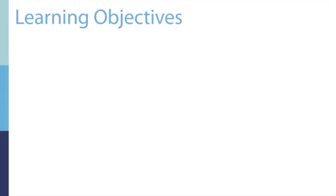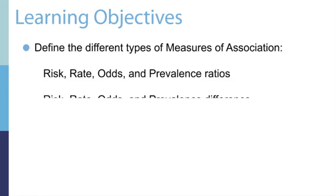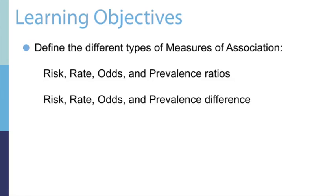After you have reviewed all of the week four lectures, you should be able to do the items listed in the learning objectives. These include defining the different types of measures of association, including risk ratio, rate ratio, odds ratio, and prevalence ratio.